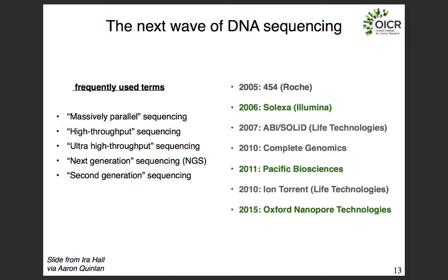Sequencing a genome at $3 billion per genome isn't really practical. So people worked really hard on developing new technology to drive the cost of sequencing down to a point now where we're sequencing human genomes for around $1,000 per genome.